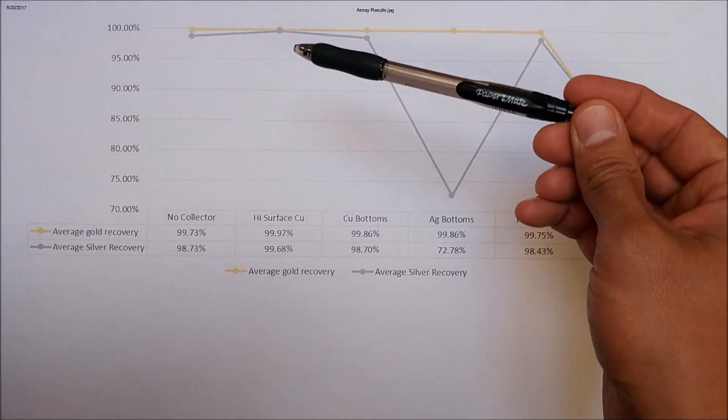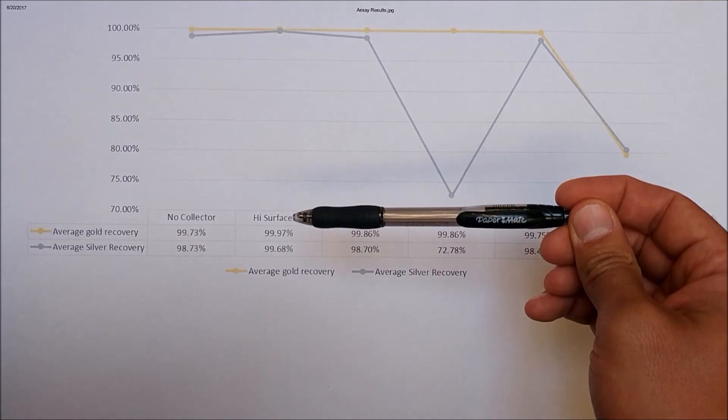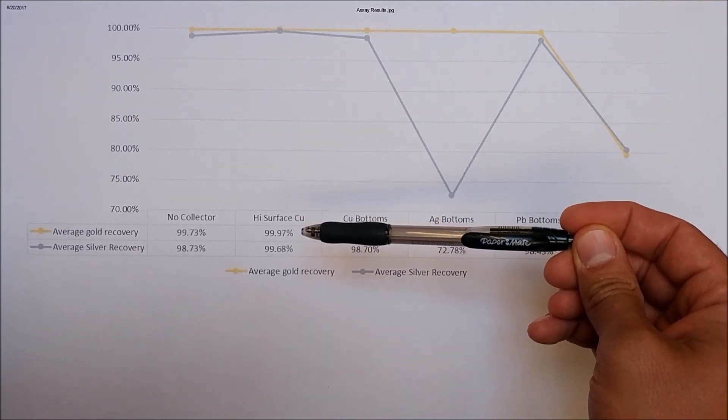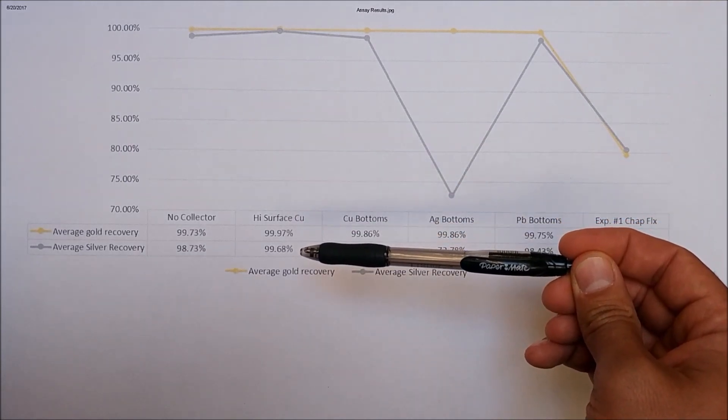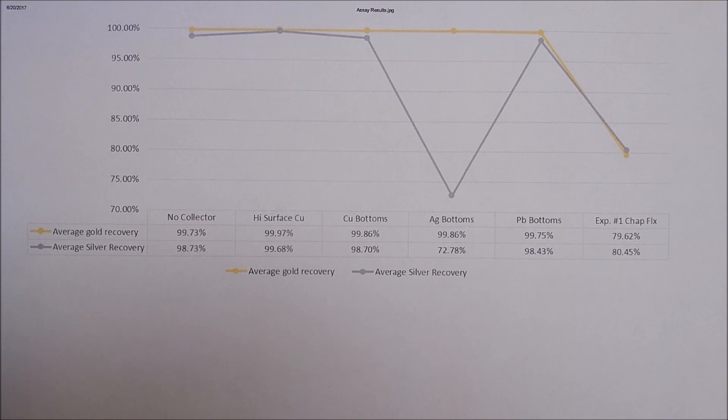The high surface area copper was actually even better. There was three nines recovery of the gold and 99.68% recovery of the silver.